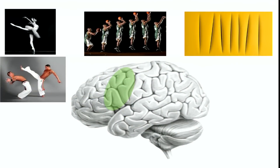An interesting study by Victoria Gillesi looked at whether you get motor system activations when looking at the consequences of a motor act. They showed paintings by Luciano Fontana — slashed canvases — and asked whether observing this artwork activates a mental representation of the action used to produce those slashes. They found that you do: your motor system is active when viewing the consequences of a motor act, not just when observing the act itself.